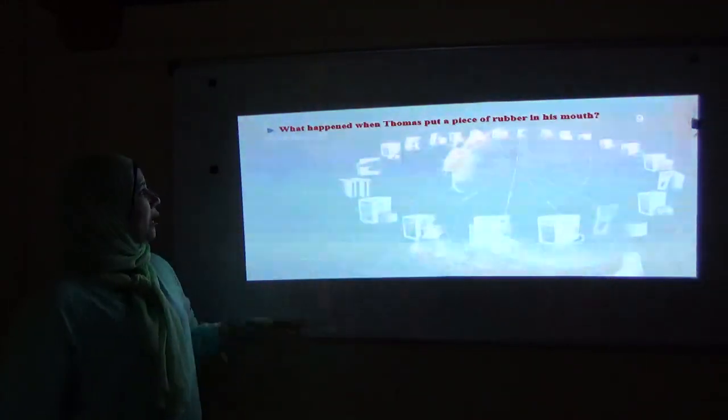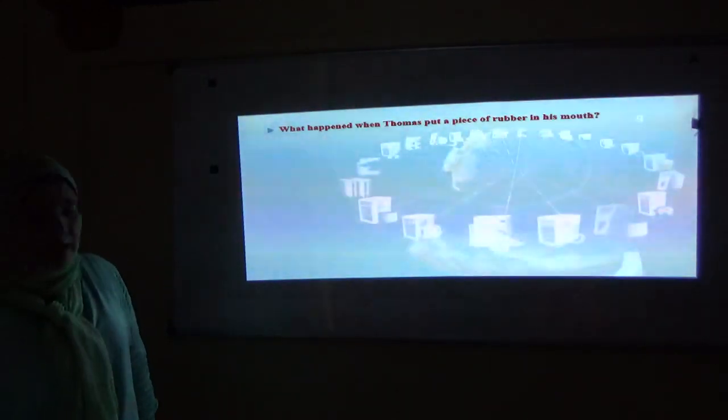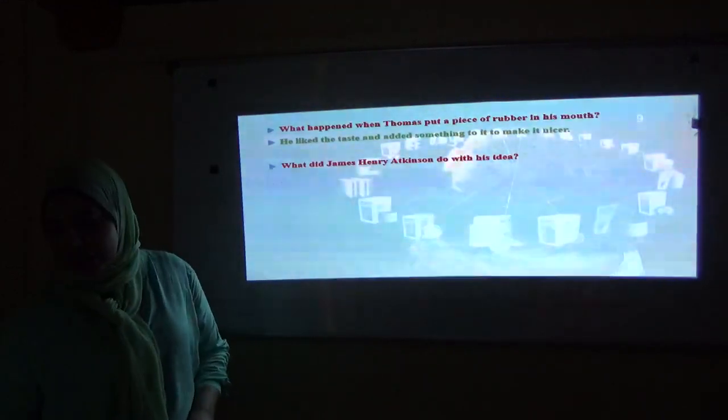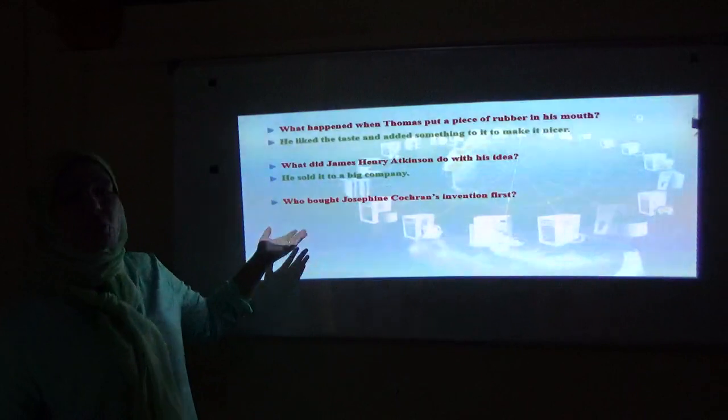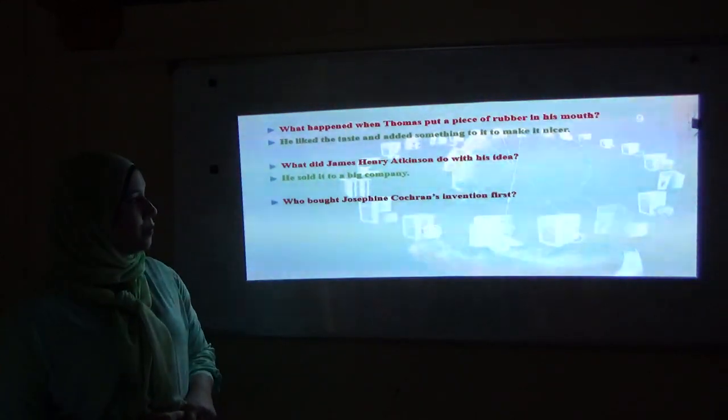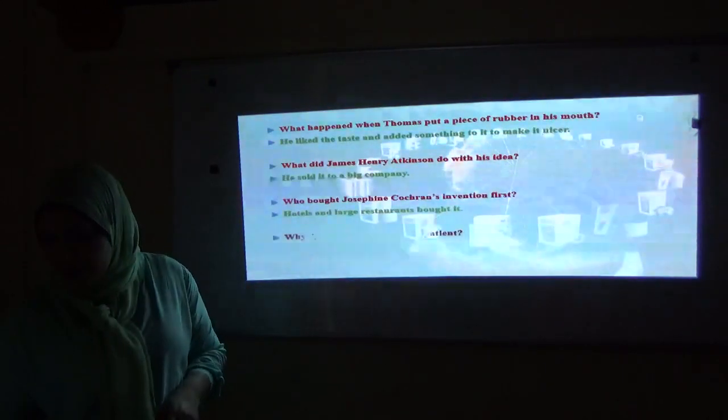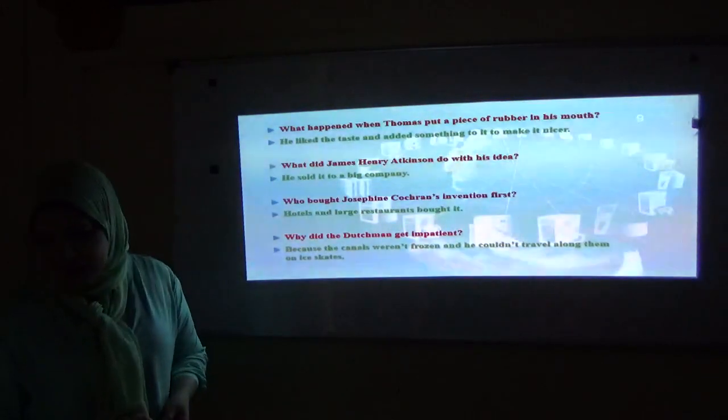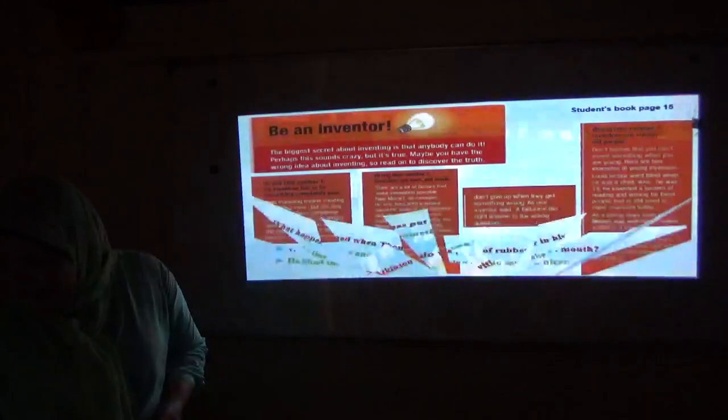Now, ladies, I want you to think about these questions. What happened when Thomas put a piece of rubber in his mouth? Brilliant. Yes, he liked the taste and added something to it to make it nicer. Number two, what did James Henry Atkinson do with his idea? He sold it to a big company. Number three, who bought Josephine Cochran's invention first? Yes, excellent. Hotels and large restaurants bought it. Number four, why did the Dutchman get impatient? Because the canals weren't frozen and he couldn't travel along them on ice skates.